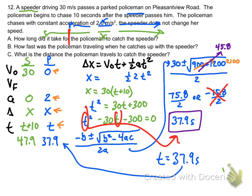Remember that that is the time: 37.9 seconds, since t was our variable that we used to develop the quadratic. That also makes the speeder go 47.9 seconds.